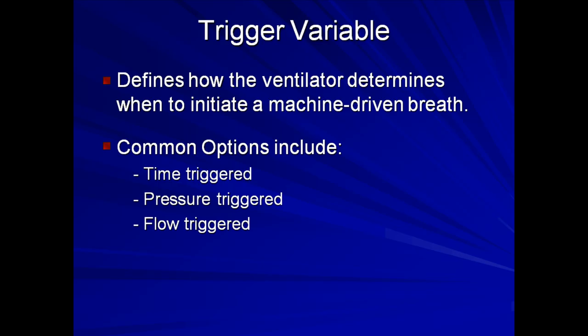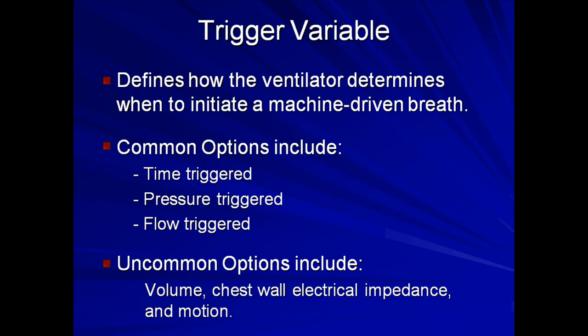For patients with spontaneous respirations, this variable may be set to either pressure triggered or flow triggered such that the ventilator delivers a breath when either a threshold negative pressure or a threshold degree of flow is detected. Both pressure triggered and flow triggered ventilation are equally effective and there is rarely an advantage to switching from one to the other, with the exception of patients with COPD who may do better with a flow trigger. Triggering options used less frequently include volume, chest wall, electrical impedance, and motion.